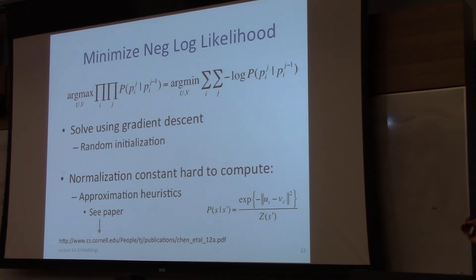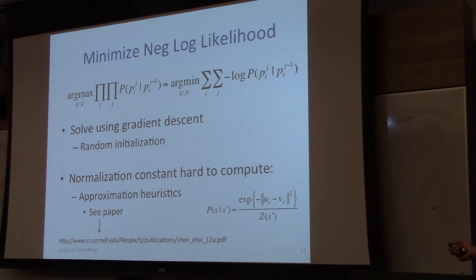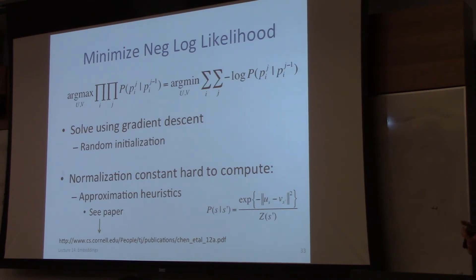There are approximation heuristics to deal with this. Everything is centered around V of S prime, and this thing decays exponentially. Things quite far away from V of S prime don't even need to be summed — it'll underflow so fast. There are other characteristics you can use as well.